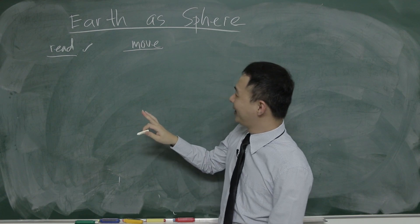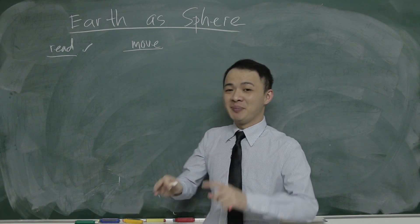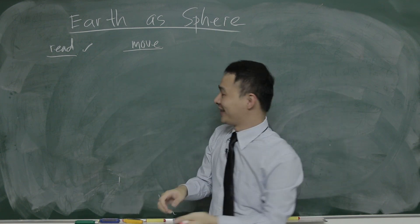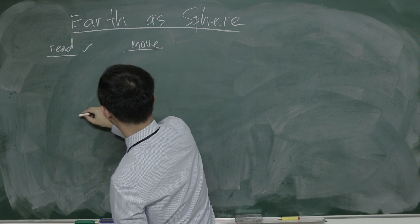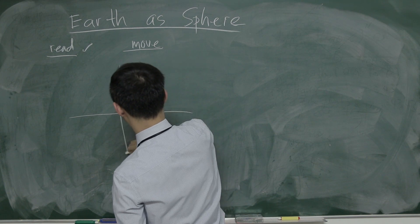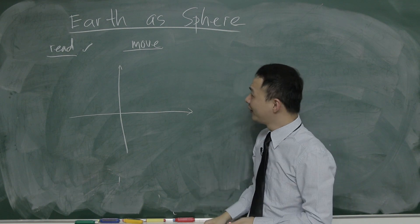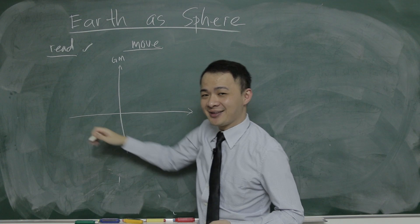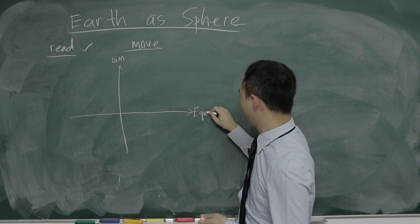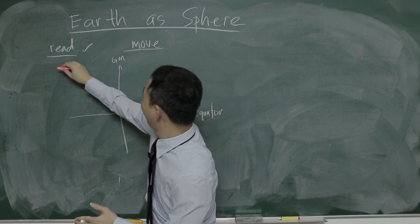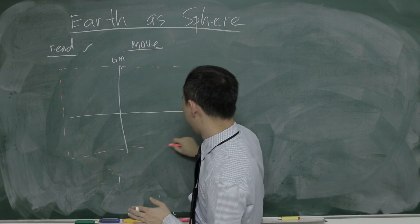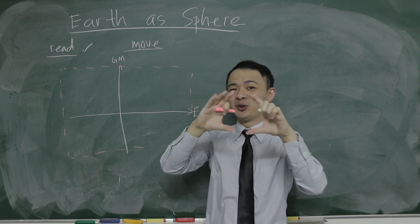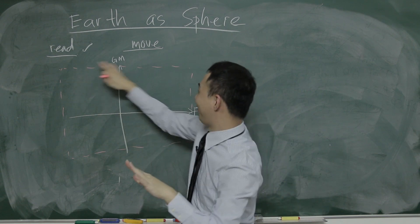I'll try to make this video easy to understand. Imagine if you have a sphere here — I'm trying to open up the sphere and make it into a rectangle. You kind of need to imagine that. So therefore, it will become like an X-axis and Y-axis, because it's easier for you to understand.